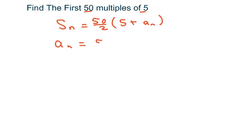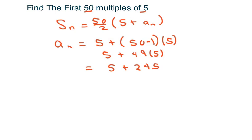My first term is 5 plus 50 minus 1. The common difference is 5. So that's going to be 5 plus 49 times 5, and 49 times 5 is going to be 245. So we're ending at 250.